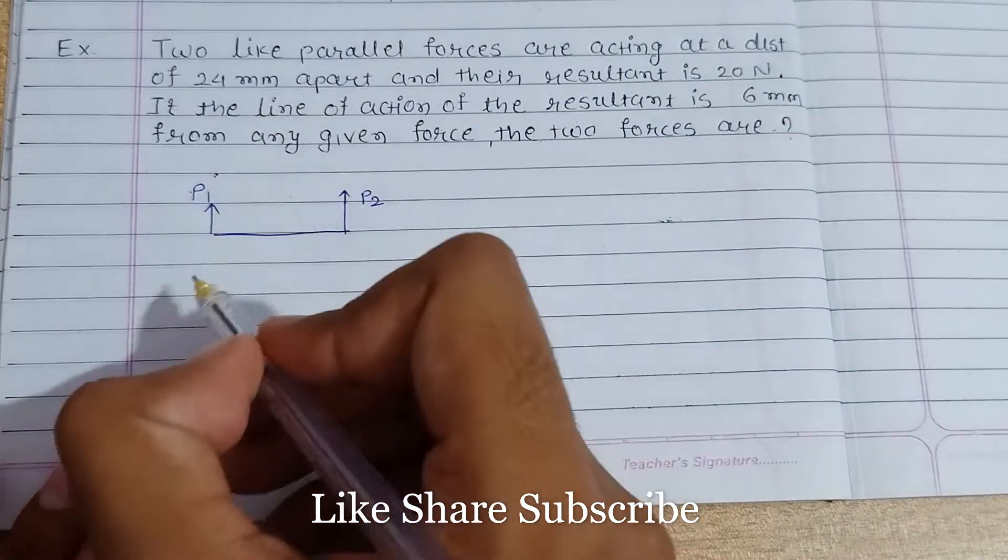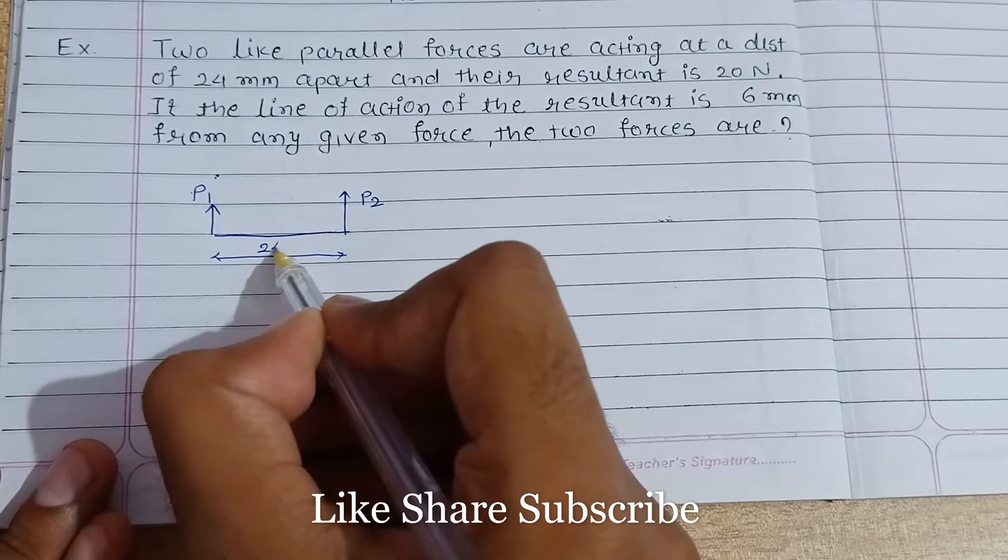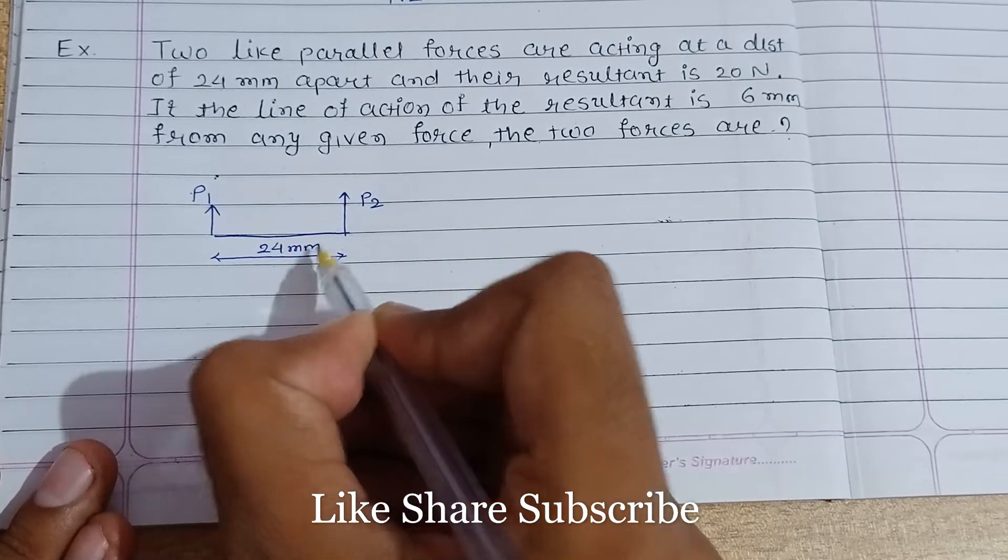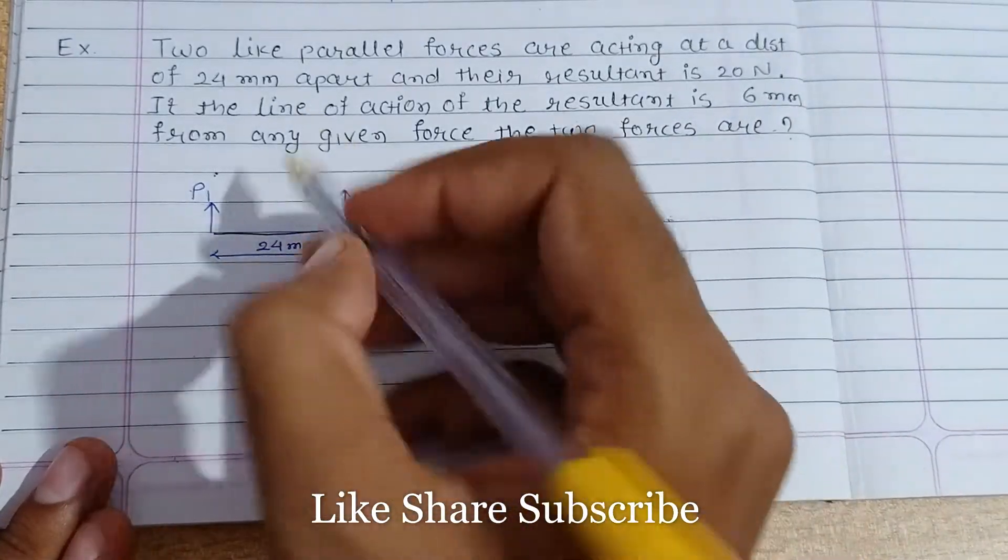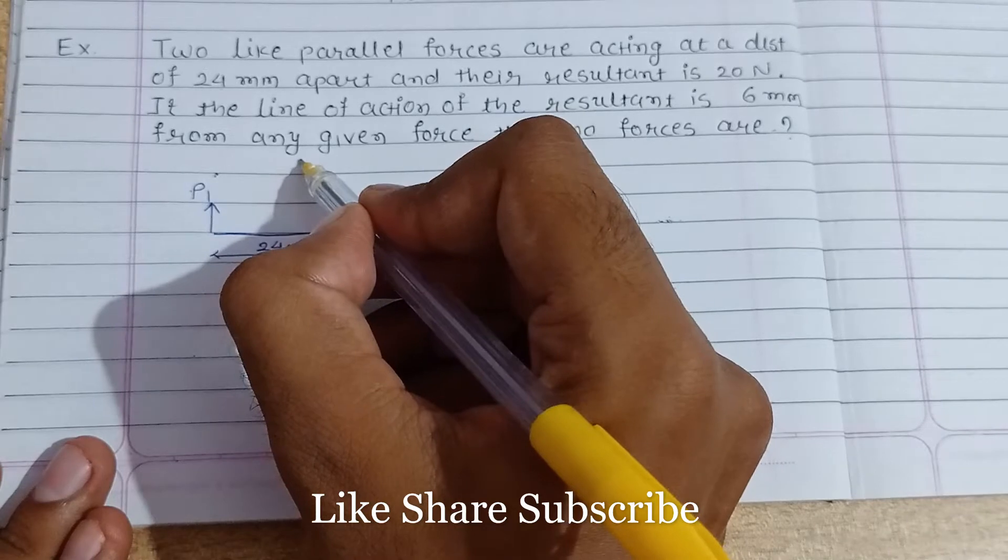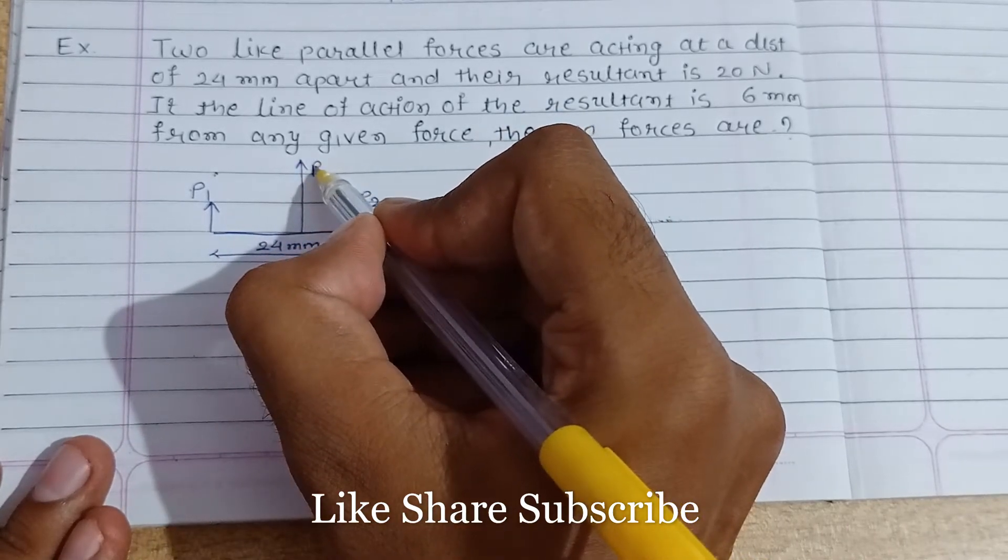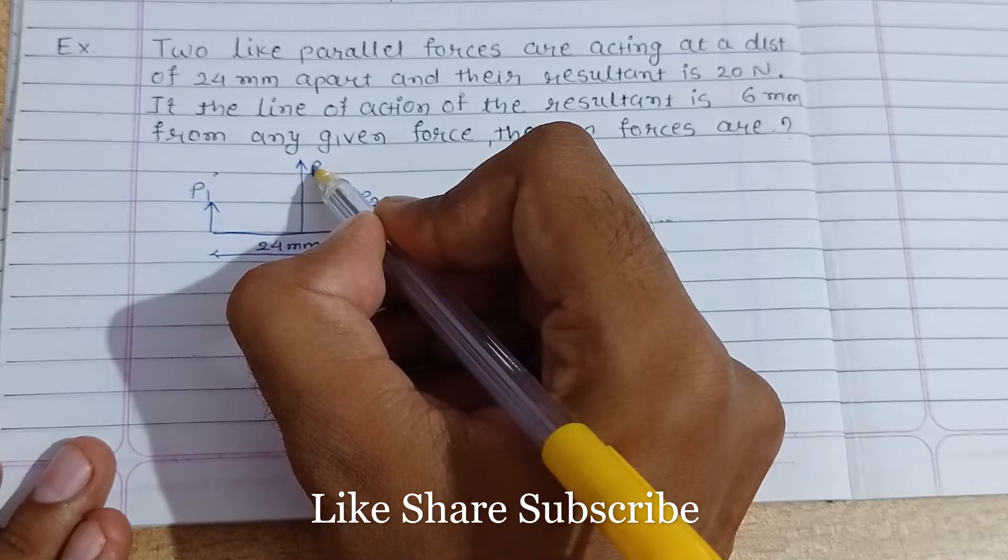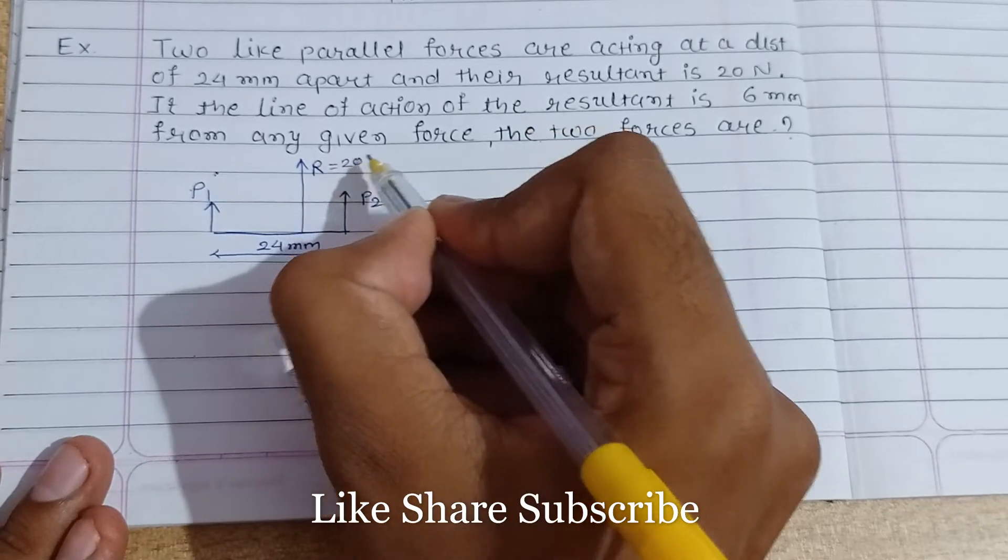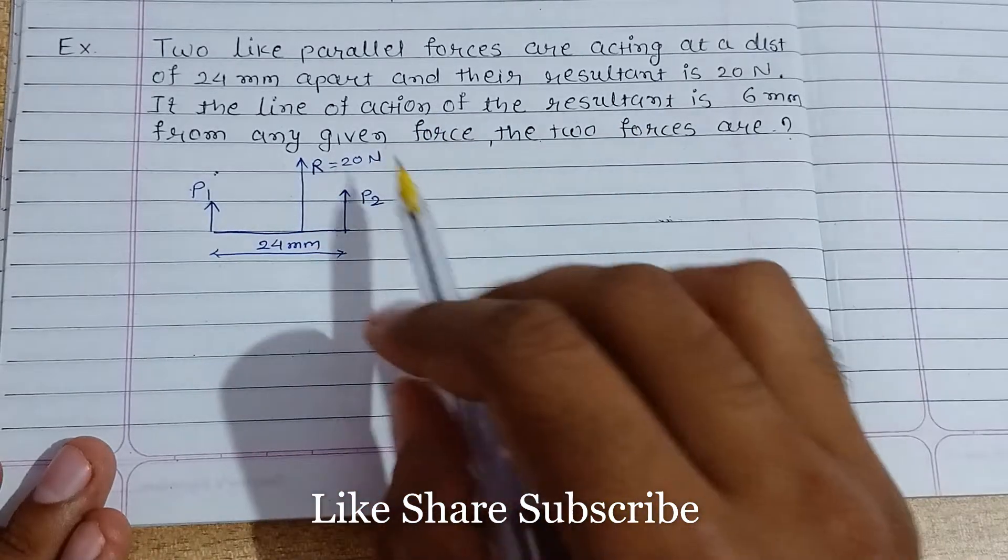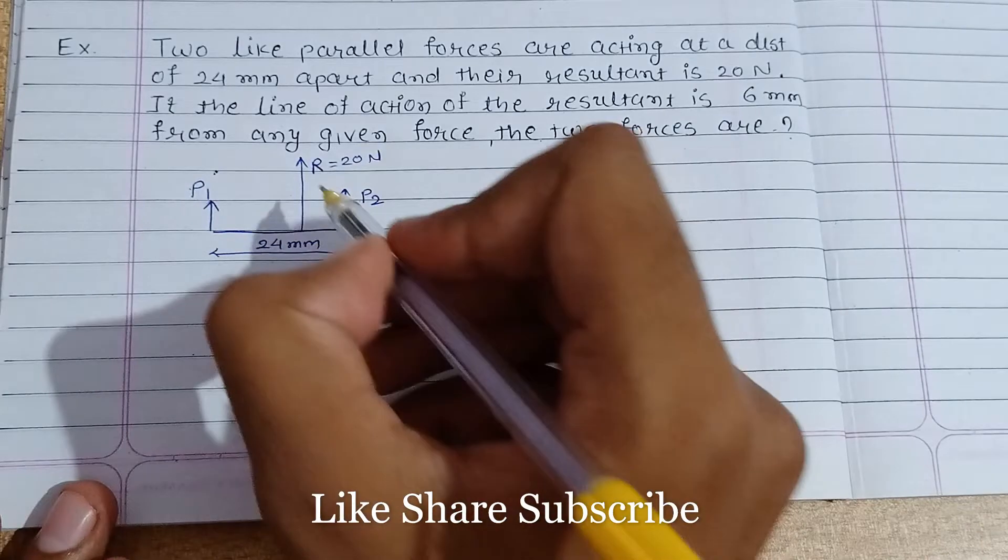Acting at a distance of 24 mm, so the distance between these two forces is 24 mm apart, and the resultant is 20 newton. So the resultant of these two, let's assume that resultant is acting over here, so resultant R is equals to 20 newton. If the line of the action of the resultant is 6 mm from the any given forces.